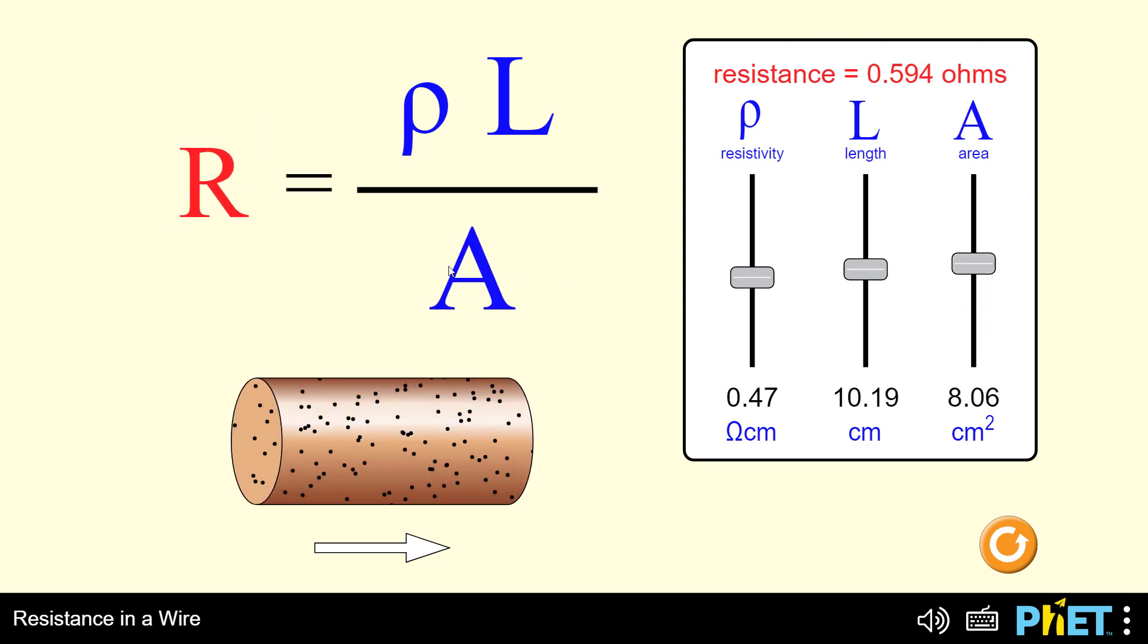In other words, if we want to reduce the value of the resistance, we will increase the value of the cross-sectional area of the material.